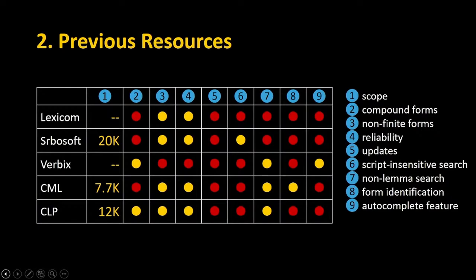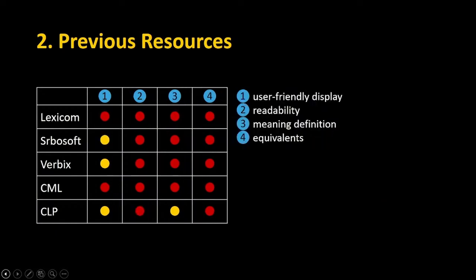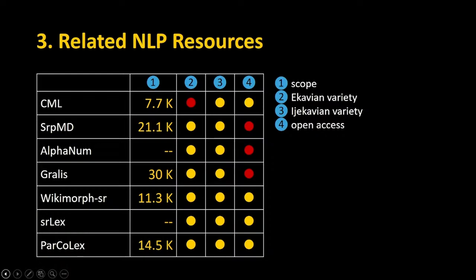Webix also has an autocomplete feature which predicts the end of the form as the user types, saving time. Most of these resources possess a user-friendly display but without colors or different font sizes, making it sometimes very difficult to read entries. These resources are also not interlinked with other resources like monolingual or bilingual dictionaries — except the Croatian language portal — which is a big problem for users.